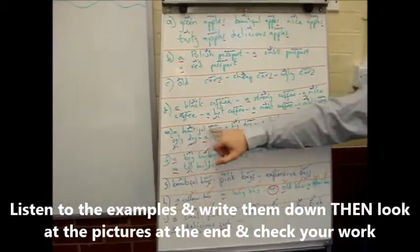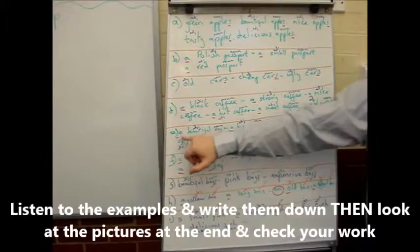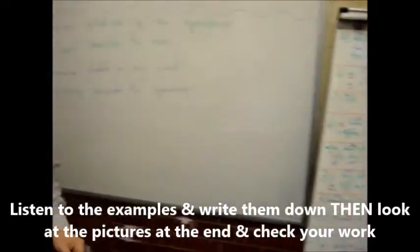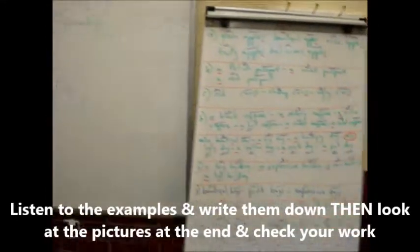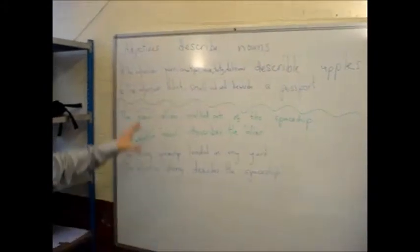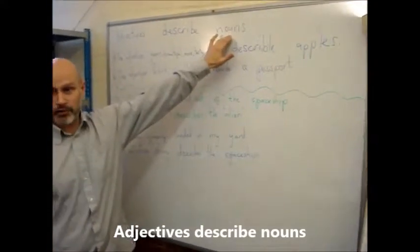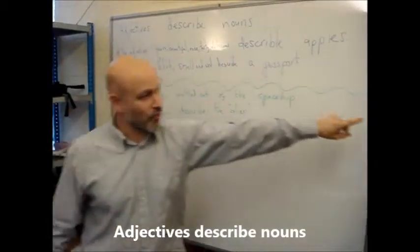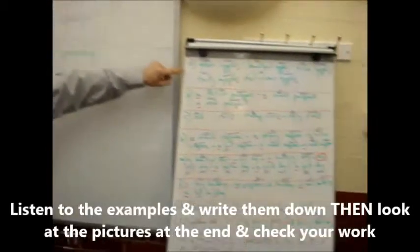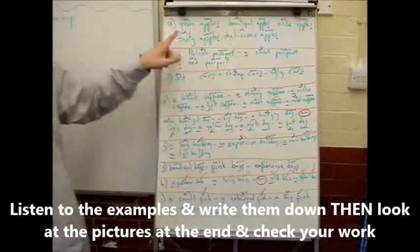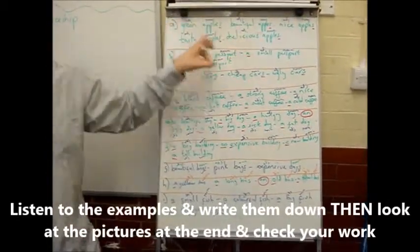A beautiful dog. A for just one. And the reason we're doing all of this is this board. Adjectives. Adjectives describe nouns. So when we look at this one over here, green apples, beautiful apples, nice apples, tasty apples, delicious apples.